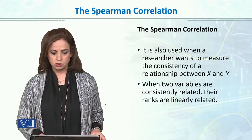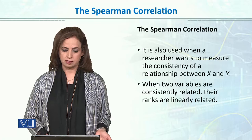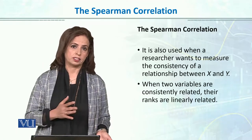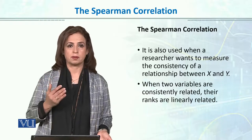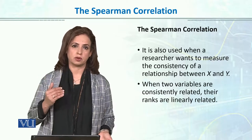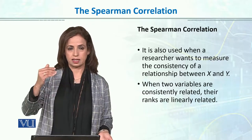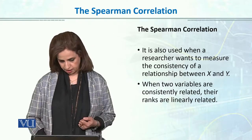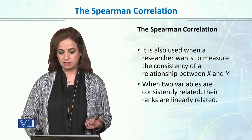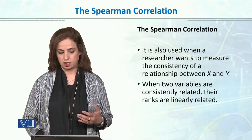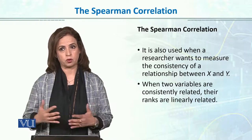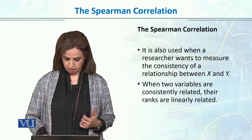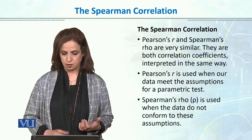Spearman is also used when the researcher wants to measure the consistency of the relationship between X and Y. Correlation tells us about consistency — as we have seen with positive and negative correlation — whether both variables are moving in the same direction or different directions. When two variables are consistently related, their ranks are linearly related.